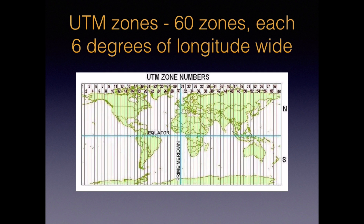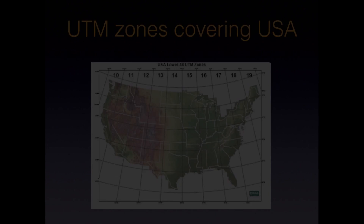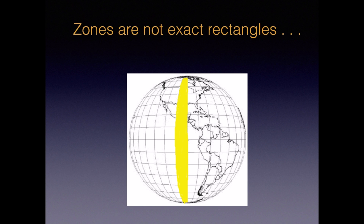UTM zones divide the world into 60 tall skinny rectangles, each one 6 degrees of longitude wide. Zone 1 starts at the international dateline, and then moving east in 6-degree increments, the zones increase in number moving around the globe. The US is covered from zone 10 to zone 19. Where I am in western Oregon happens to be in zone 10. Because we can't put a rectangular grid exactly over the curved surface of the earth, the UTM zones are widest at the equator and narrow as they approach the poles.